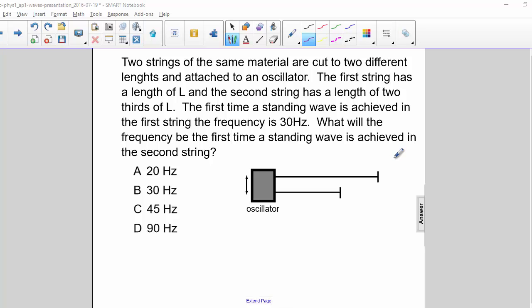Two strings of the same material are cut to two different lengths and attached to an oscillator. The first string has a length of L, and the second string has a length of two-thirds L.